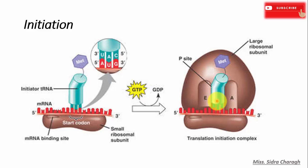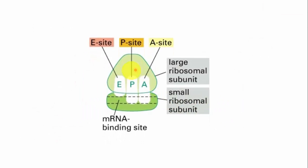The assembled ribosome produces two ribosomal binding sites: the P site and the A site. The P site, or peptidyl site, is the site where the peptide bond forms. The A site, or aminoacyl site, is the site where successive amino acid-bearing transfer RNAs will bind. The E site is the exit site where empty transfer RNAs exit the ribosome.